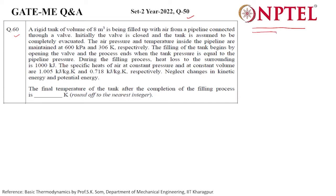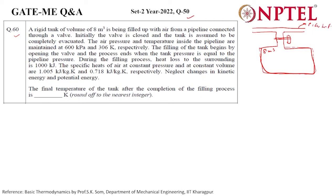We have to find the final temperature. Here is the pipeline and this is the valve; this is the tank, which is our control volume. The volume of the tank is given as 8 cubic meters. Initially, the valve is closed and the tank is completely evacuated. The air pressure and temperature inside the pipeline are maintained at 600 kPa and 306 Kelvin.